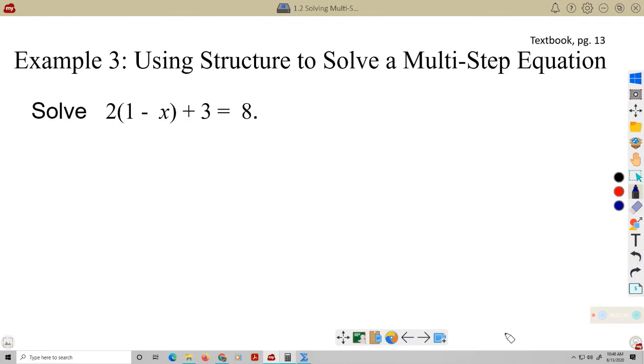Example 3. I got to get this clicking thing down here, I guess. Using structure to solve a multi-step equation. Again, we want to simply... The idea is real simple. Simplify each side as much as you can. And then use inverse operations. So on this example here, we've got these parentheses happening. So it's some kind of distributive property thing going on. This plus 3 happens afterwards. So let's use what we know about the distributive property to simplify the left side of the equation.